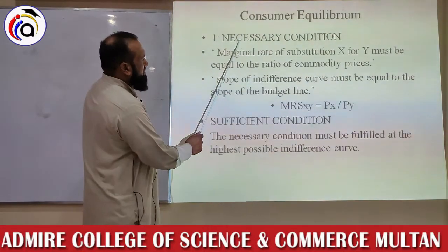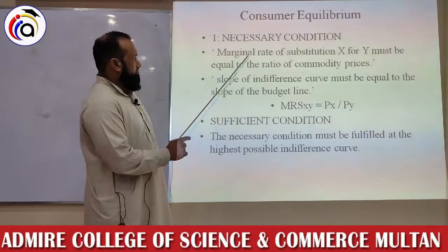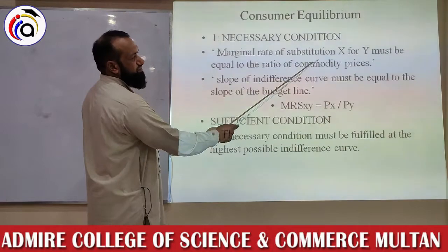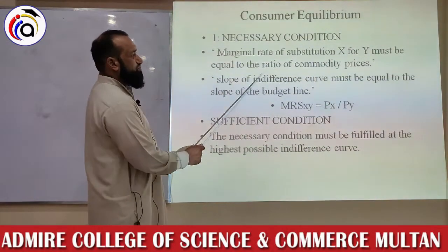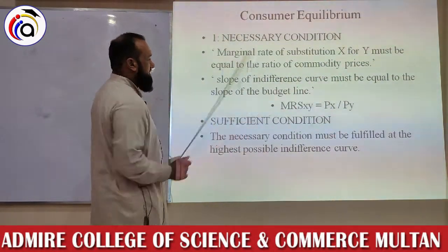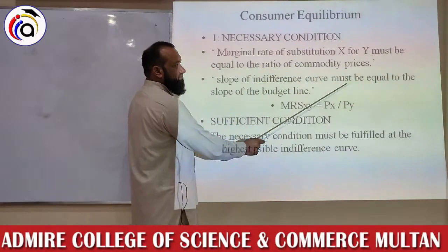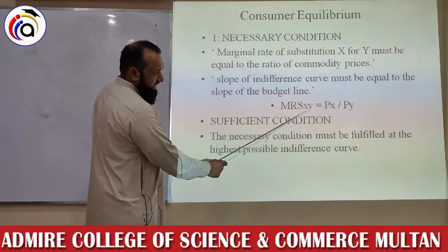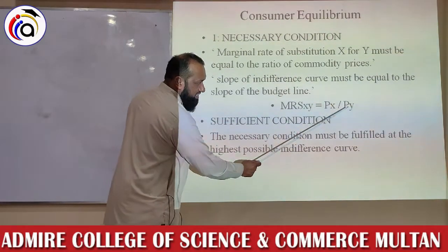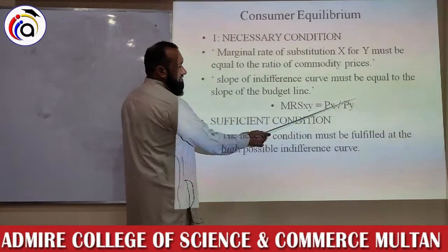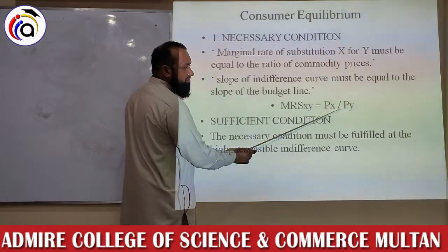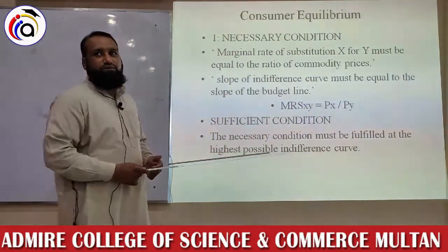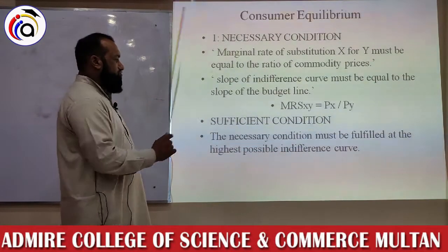The necessary condition for consumer equilibrium: MRS — marginal rate of substitution of X for Y — must be equal to the ratio of commodity prices. The slope of the indifference curve must be equal to the slope of the budget line, expressed as MRS(xy) = Price of X / Price of Y. When the slopes of both curves become equal, the consumer achieves equilibrium at that point.